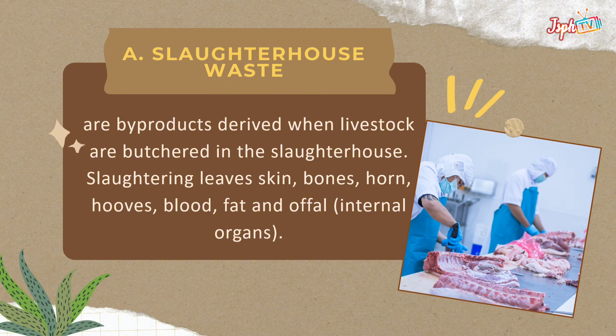First, we have slaughterhouse waste — by-products derived when livestock are butchered in the slaughterhouse. Slaughtering leaves skins, bones, horn, hooves, blood, fat, and offal.